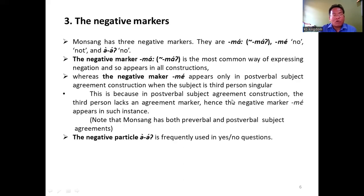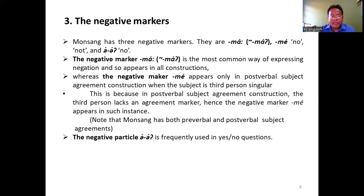The negative markers. Monsang has three negative markers: ma, me, and a. The negative marker ma is the most common way of expressing negation and so appears in all constructions. Whereas the negative marker me appears only in post-verbal subject agreement construction when the subject is third person singular, because in that construction the third person does not have an agreement marker. Monsang has both pre-verbal and post-verbal subject agreement markers. The negative particle a is frequently used in yes-no questions.